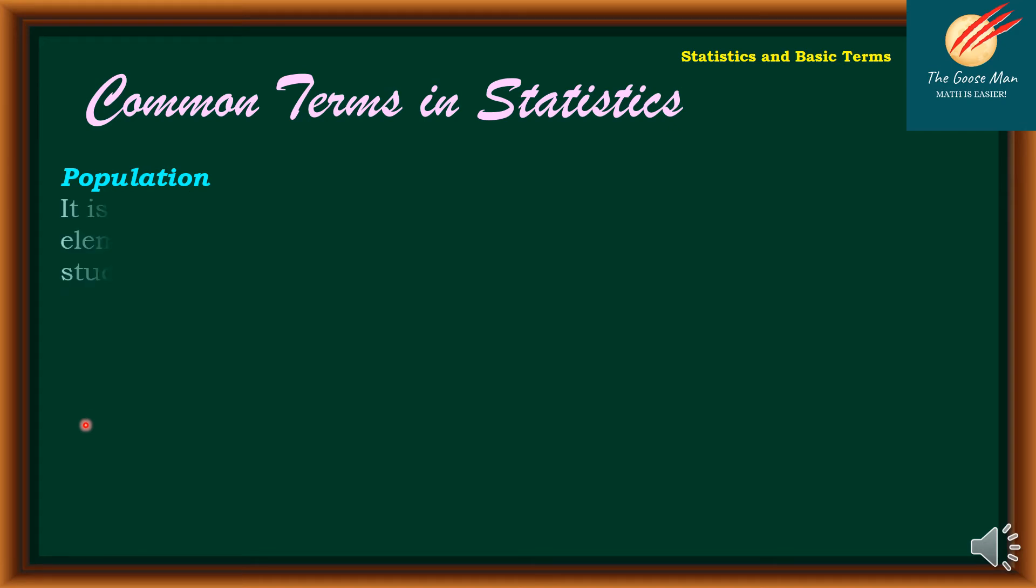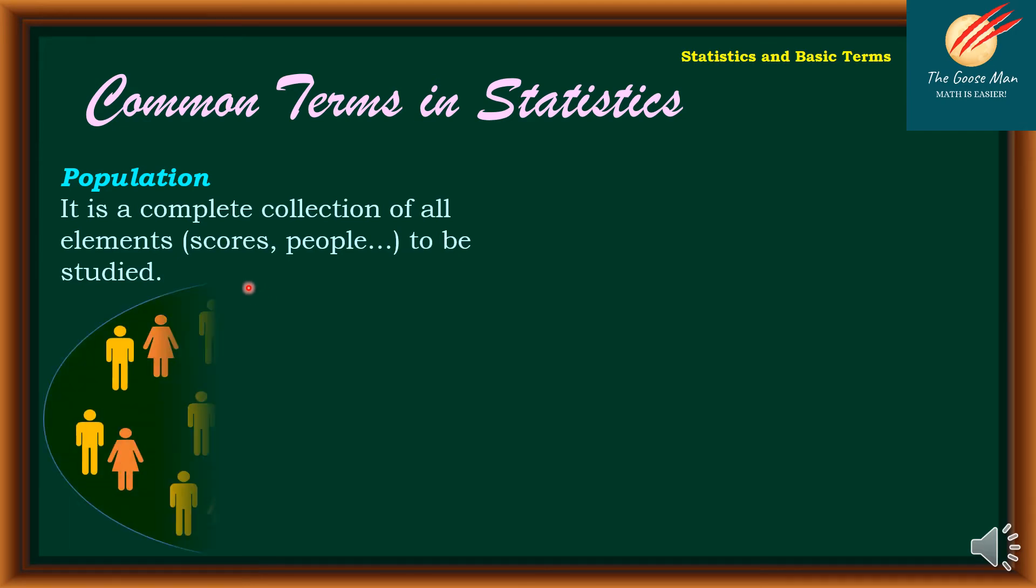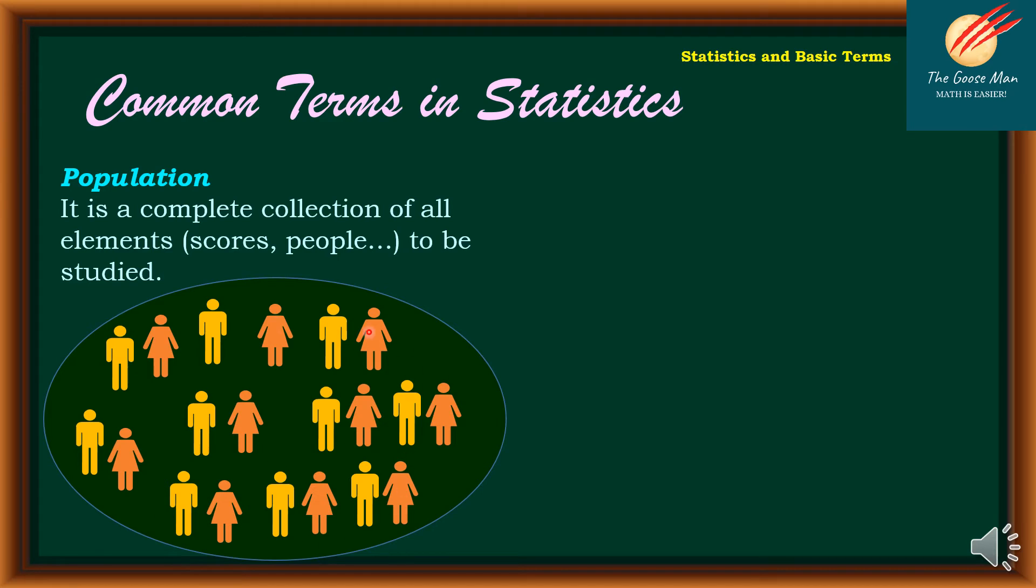Now that we defined statistics, let's move on to the common terms in statistics. Population is a complete collection of all elements, scores, people, and others to be studied. This is the graphical representation of the population.